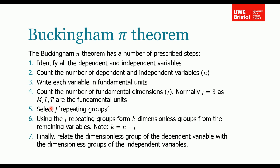We then need to select j repeating groups — so if j is 3, we need 3 repeating groups. We then use the j repeating groups to form k dimensionless groups, where k is the number of variables minus the number of fundamental dimensions. The final part is to relate the dimensionless group of the dependent variable with the dimensionless groups from the independent variables.